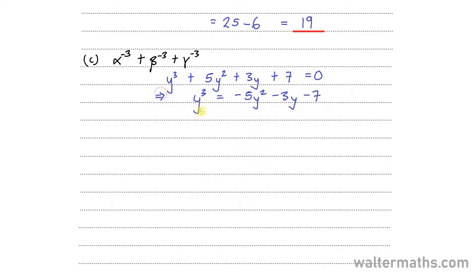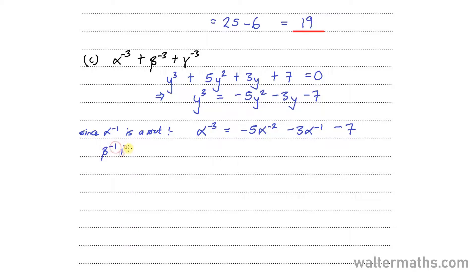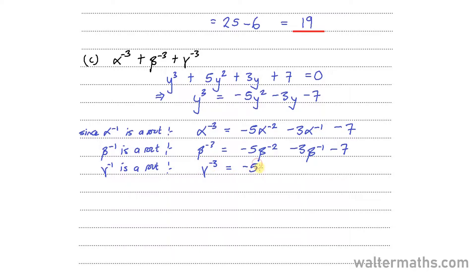Since alpha to the minus 1 is a root of this equation, I can substitute it, giving alpha to the power of minus 3 equal to minus 5 of alpha to the power of minus 2 minus 3 of alpha to the power of minus 1 minus 7. Similarly, beta to the power of minus 1 is a root, so beta to the power of minus 3 equals minus 5 of beta to the power of minus 2 minus 3 of beta to the power of minus 1 minus 7. And gamma to the power of minus 1 is a root, so gamma to the power of minus 3 equals minus 5 of gamma to the power of minus 2 minus 3 of gamma to the power of minus 1 minus 7.